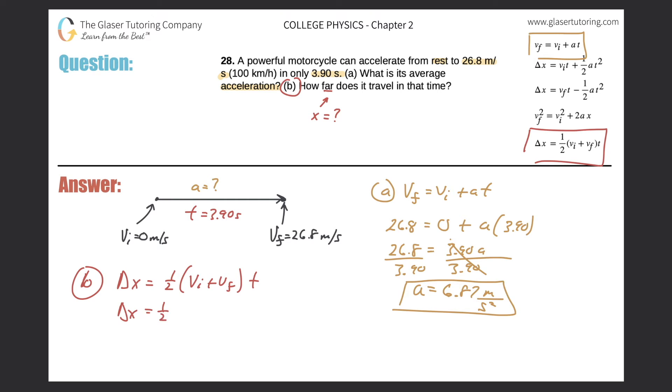So let's just now plug in the values. The initial velocity was zero, my final velocity was 26.8, and the time again was 3.90 seconds.